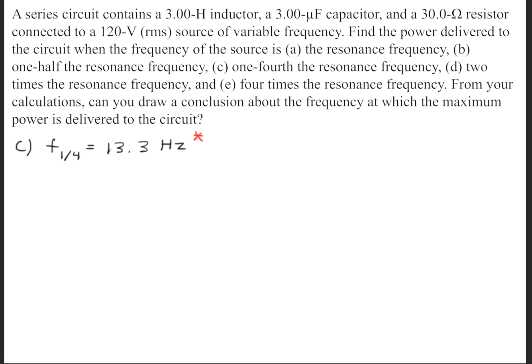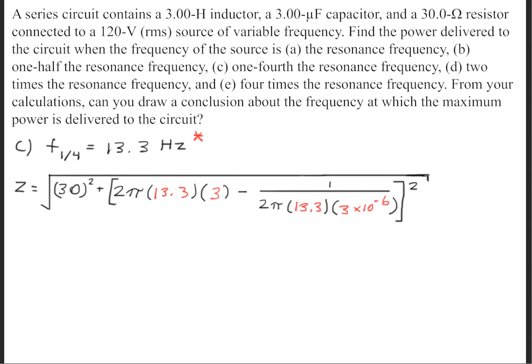Part C is asking when you have one-fourth the resonant frequency. At one-fourth the resonance frequency, you'll have about 13.3 Hertz. Once again, we'll be plugging this into the impedance formula, and we'll get an impedance of about 3,740.4 Ohms.